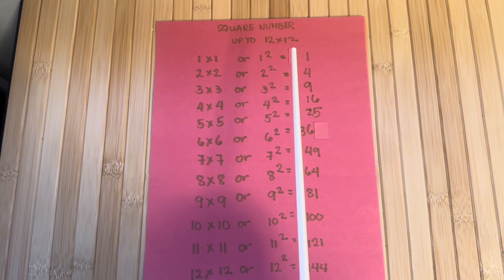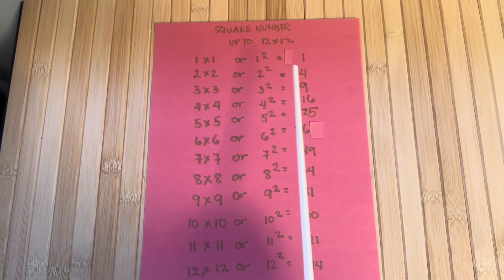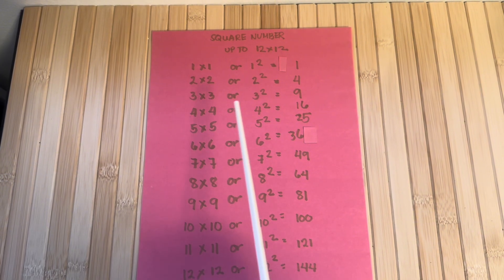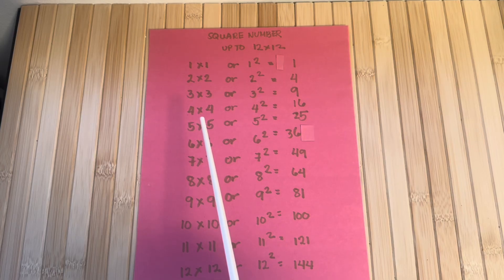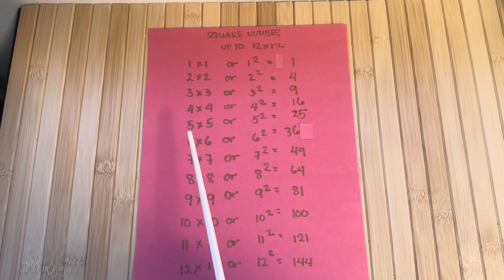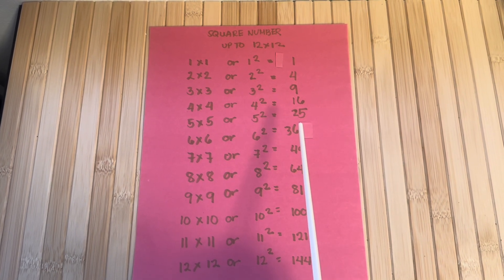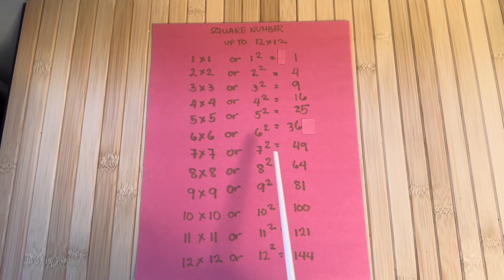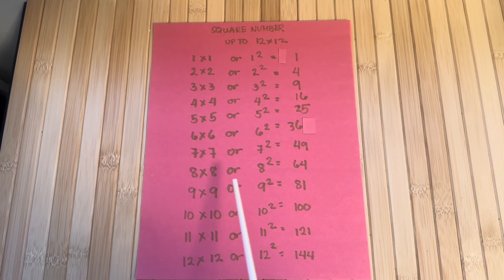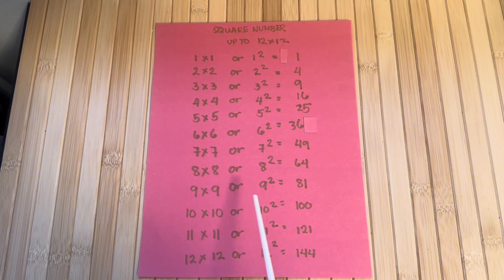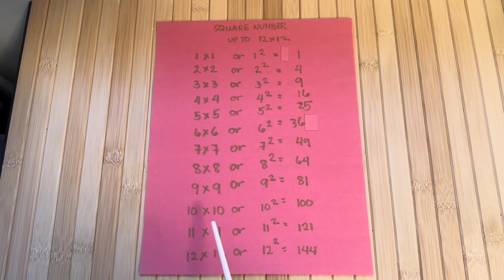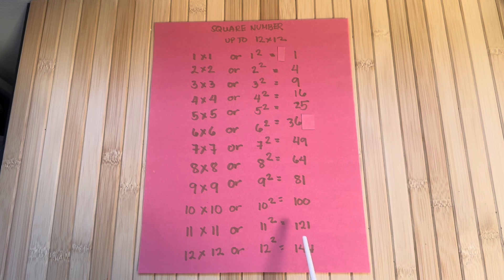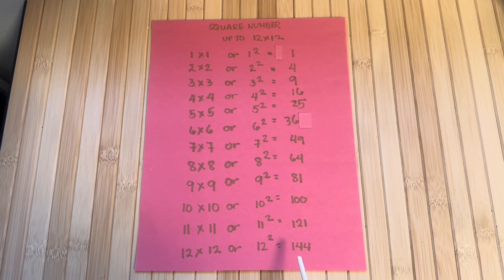Let's check out square numbers up to 12 by 12. 6 times 6, or 6 squared, is equals to 36. 7 times 7, or 7 squared, is equals to 49. 8 times 8, or 8 squared, is equals to 64. 9 times 9, or 9 squared, is equals to 81. 10 times 10, or 10 squared, is equals to 100. 11 times 11, or 11 squared, is equals to 121. And lastly, 12 times 12, or 12 squared, is equals to 144.